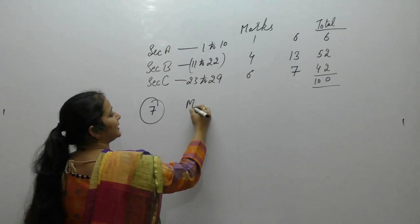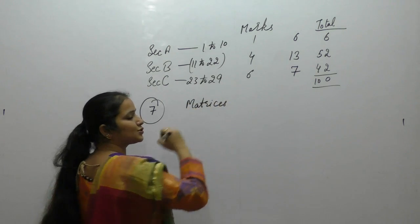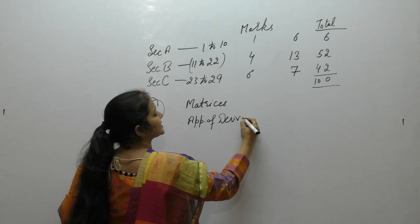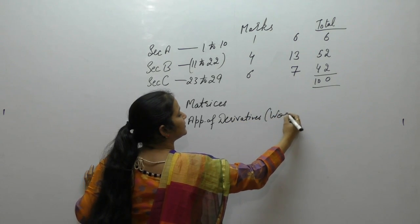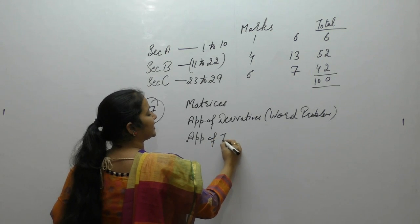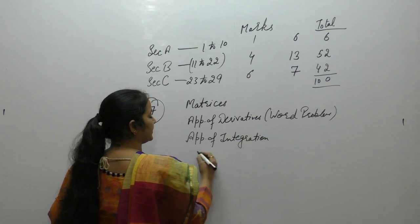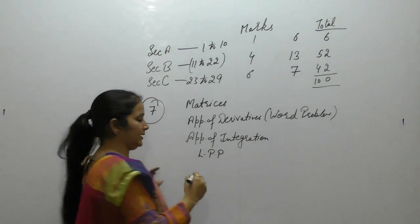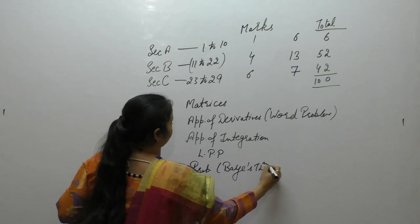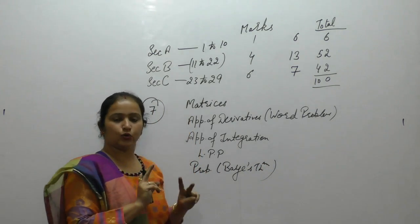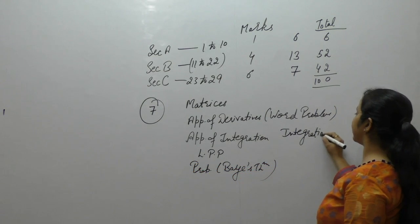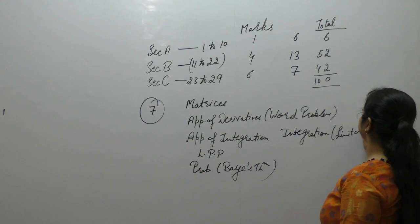In Section C, we have 7 questions. One question will be about using matrices to solve a system of linear equations. After that, application of derivatives — word problems. After that, application of integration is a confirmed question. That topic is very important.